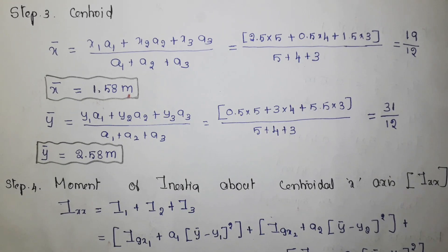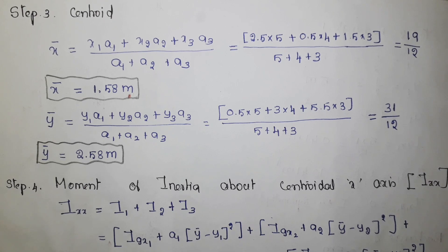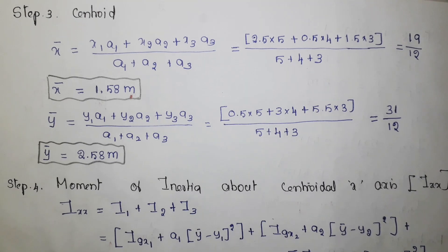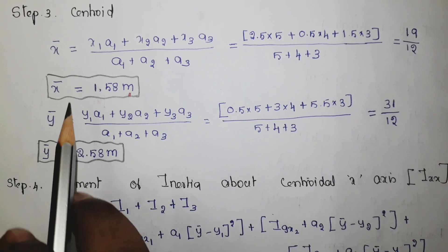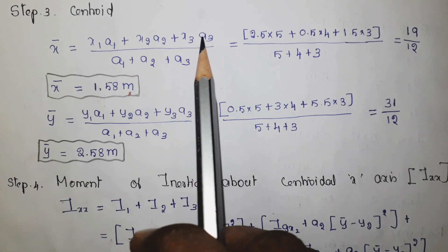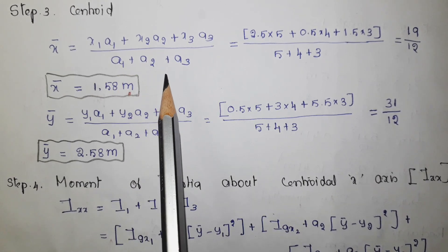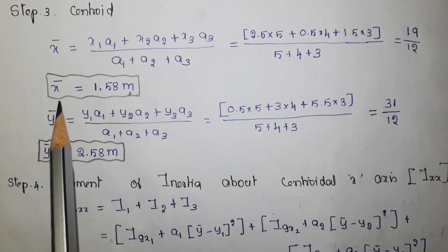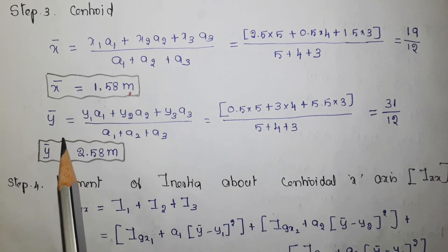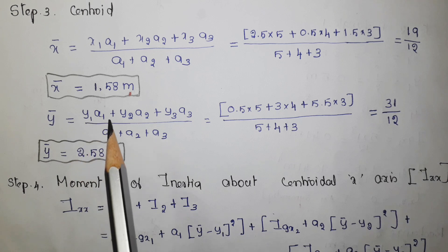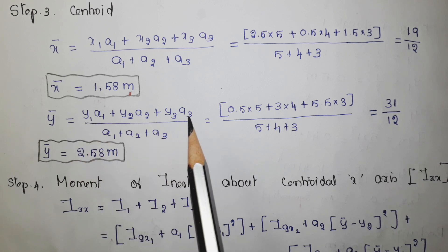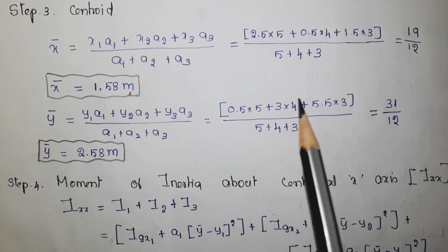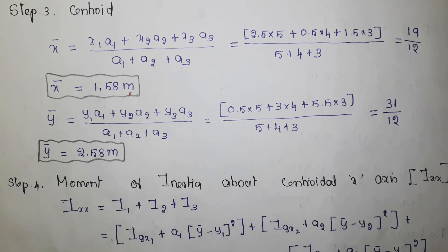Step 3 is finding the centroid, which is needed because we are finding the principal moment of inertia with respect to the centroidal axis. x-bar equals (x1·a1 + x2·a2 + x3·a3) divided by (a1 + a2 + a3). Substituting the values, the answer is 1.58 meter. Similarly, y-bar equals (y1·a1 + y2·a2 + y3·a3) divided by (a1 + a2 + a3), giving the answer as 2.58 meter.